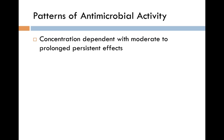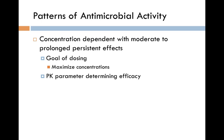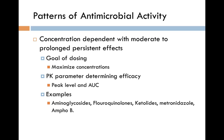Patterns of antimicrobial activity: concentration-dependent killers, like aminoglycosides and amphotericin, have moderate to prolonged persistent effects. This means we can get that high concentration and allow it to fall off, and even after the concentration falls below the MIC, it likely continues to be effective. So we want to maximize those concentrations. The pharmacokinetic parameter we look at is the Cmax-to-MIC ratio, and area under the curve is also helpful.